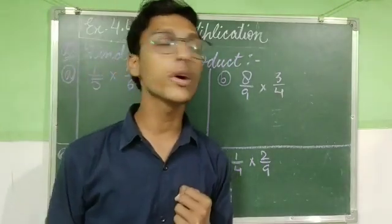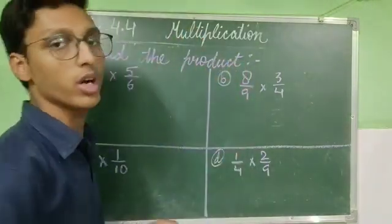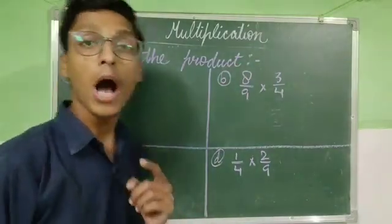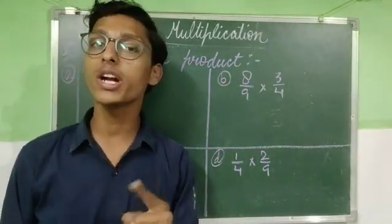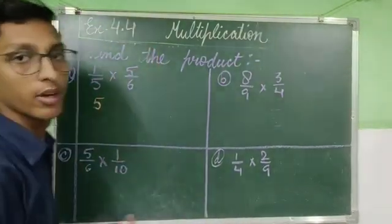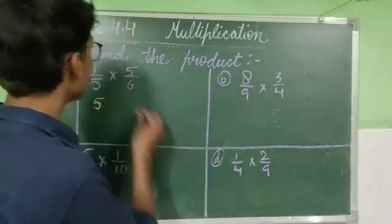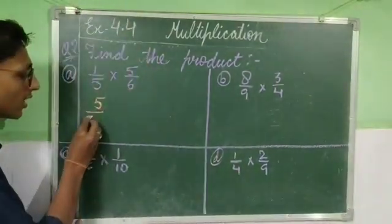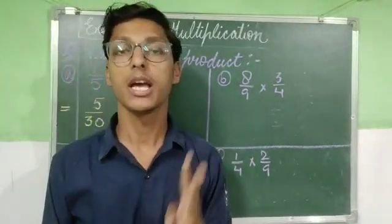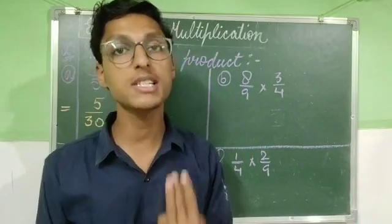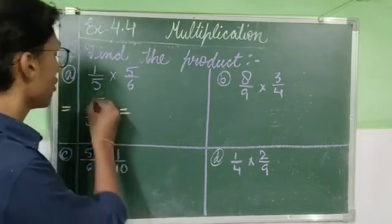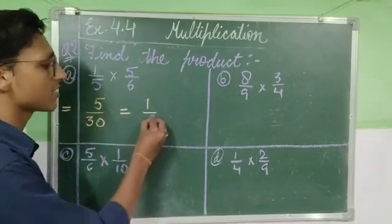Now question number 2: find the product. We need to find the product of these 2 fractions. Steps yaad rakhne honge — numerator multiplied with numerator: 5 ones are 5; and denominator multiplied with denominator: 5 sixes are 30. This gives the product, but the third step is if it is a proper fraction, it must be in simplest form.